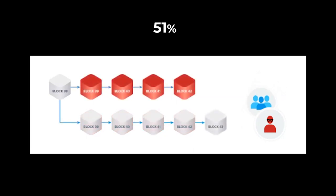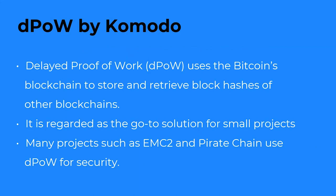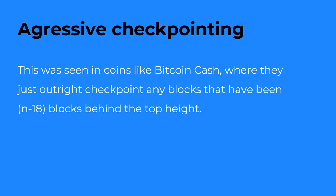There are existing methods to protect blockchains against attacks. One of the best is delayed proof-of-work by Komodo — it uses Bitcoin's blockchain to store arbitrary data, in this case block hashes, and is regarded as a go-to solution used by coins like Pirate Chain and others. Another popular solution is regression checkpoints, which simply don't allow any chain reorganization past a certain number of blocks in the past. While this can cause issues, it remains a necessary protection for some projects.